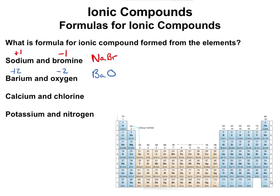For calcium and chlorine: calcium is going to have a plus two charge. Chlorine is another halogen, so it's going to be minus one. This is very similar to the magnesium and fluorine example — with a plus two and a minus one, we need two chlorines to balance it out. So the compound is written as CaCl₂.